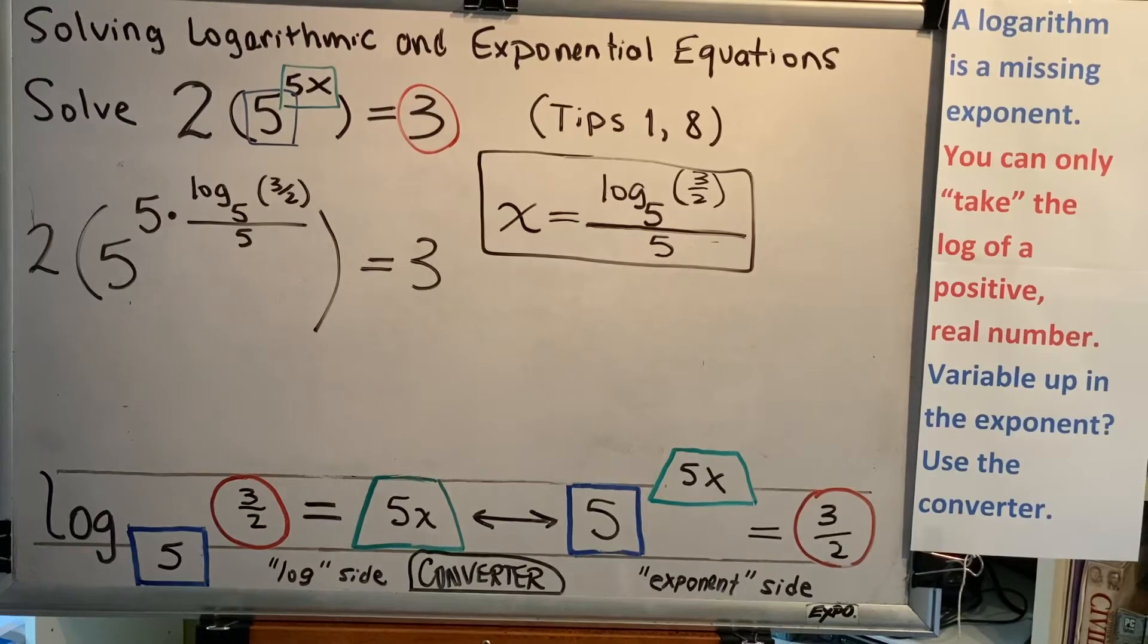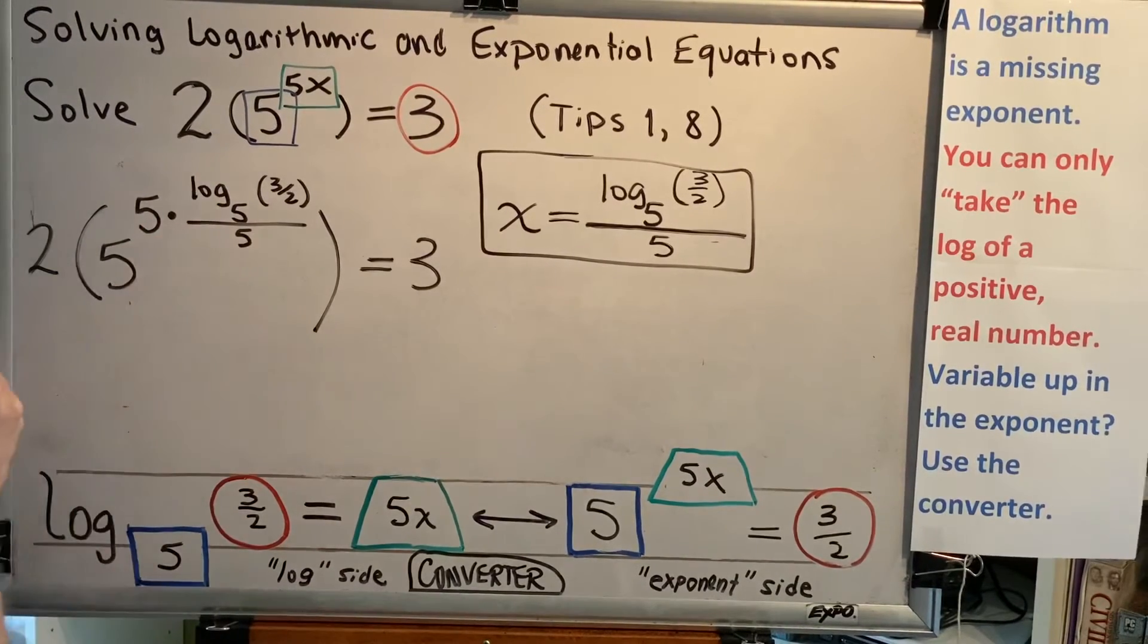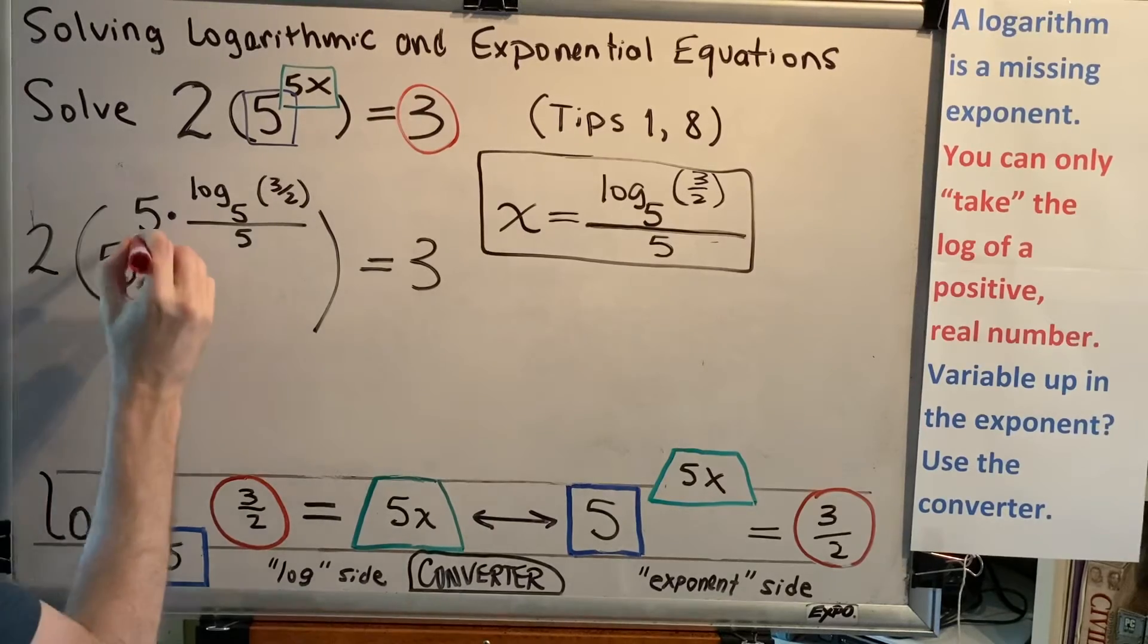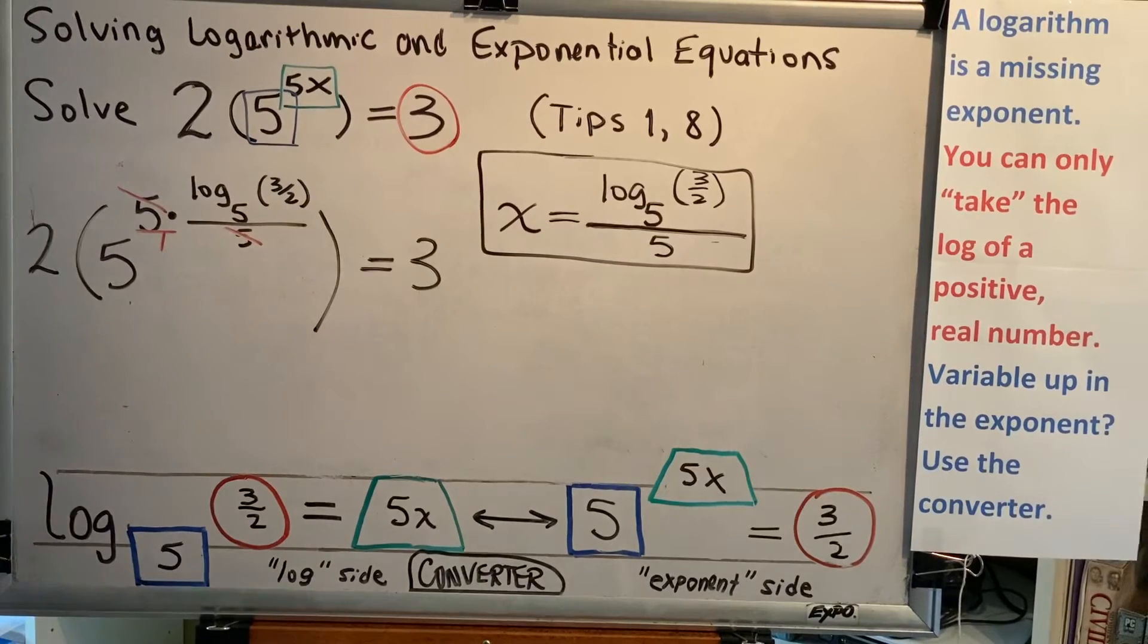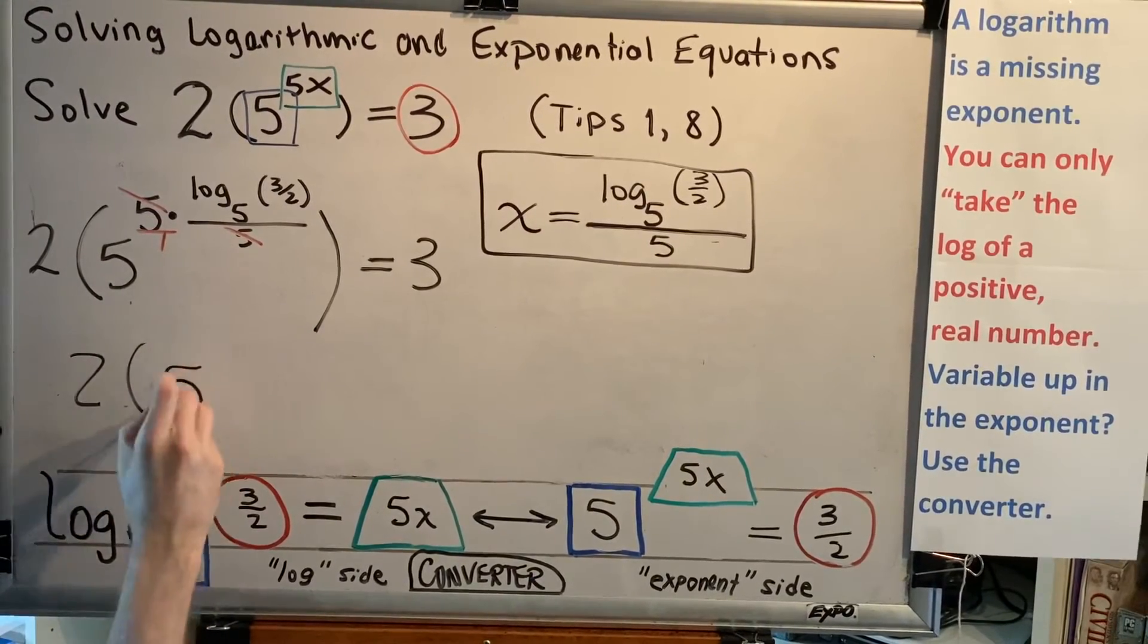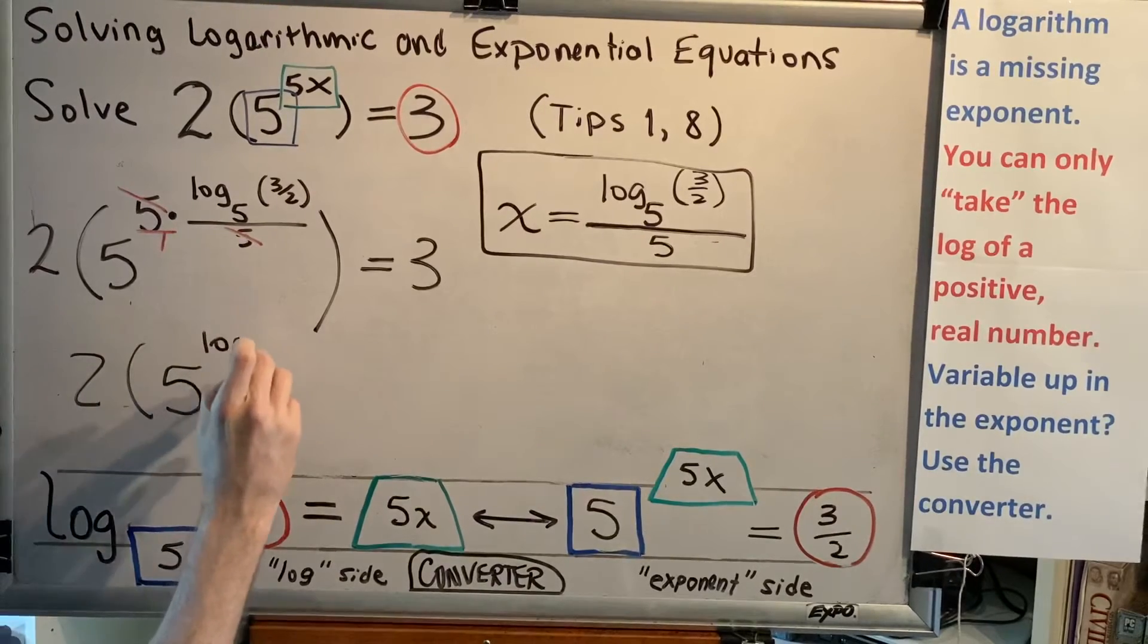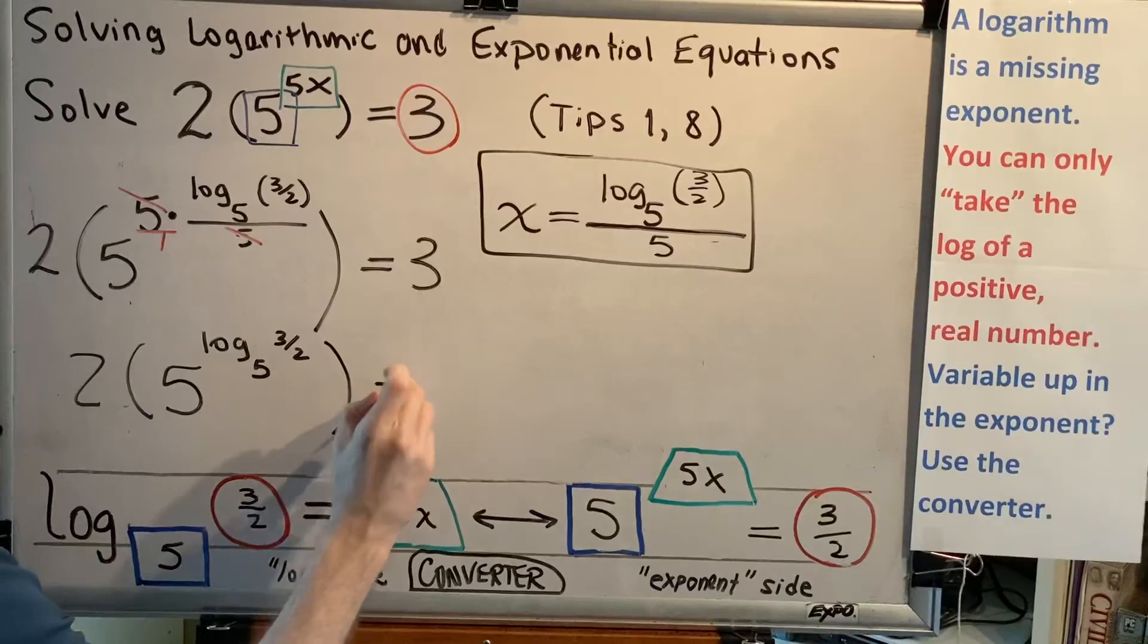But one of the things that will make this a little easier is to notice that this 5, which is the same as 5 over 1, this 5 is in the numerator, this 5 is in the denominator, and those are going to cancel. So now we have 2 times 5 to the log base 5 of 3 halves equals 3.